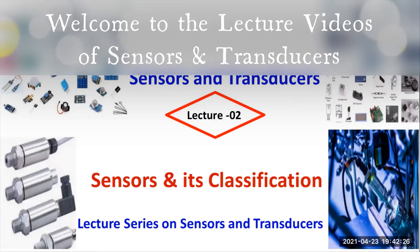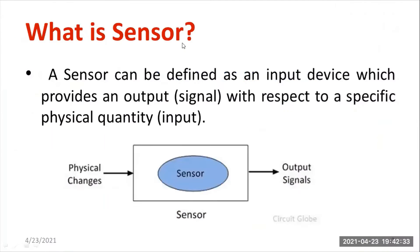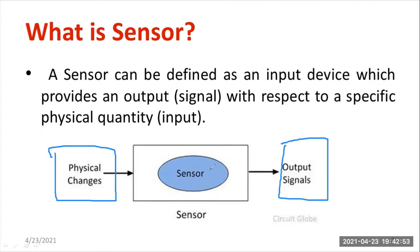Dear all, in this video I'll be discussing about the basics of sensors and its classification. Sensors can be defined as an input device which provides an output signal with respect to the specific physical quantity. With respect to physical changes you will be getting a measurable output. For example, a thermometer: with respect to change in temperature, the thermometer gives a suitable reading. A barometer measures atmospheric pressure, and with respect to changes in atmospheric pressure you will get the reading.